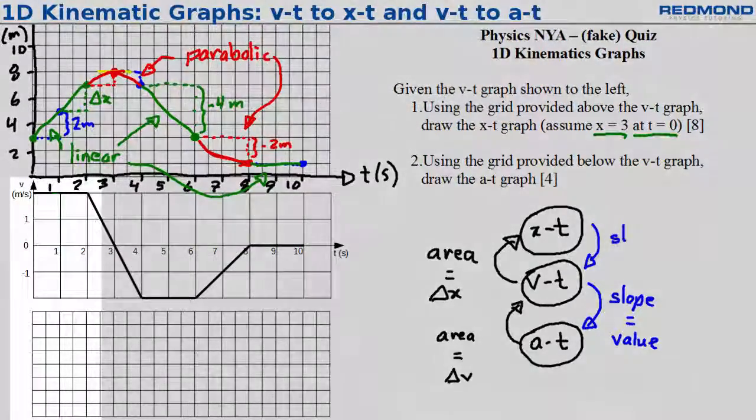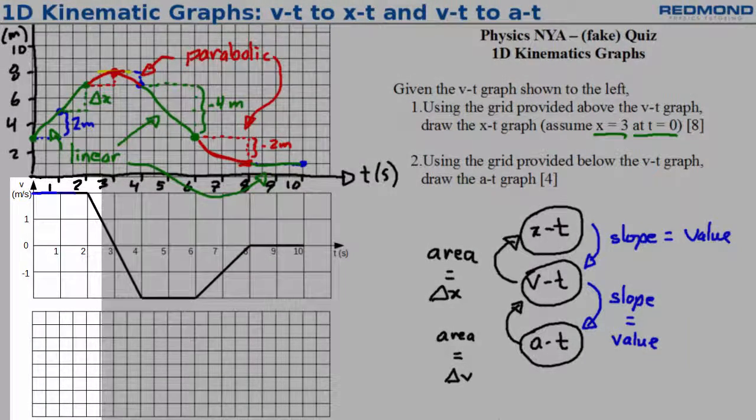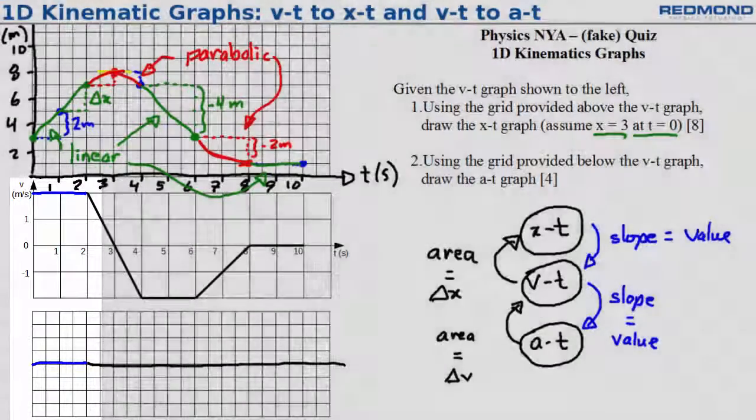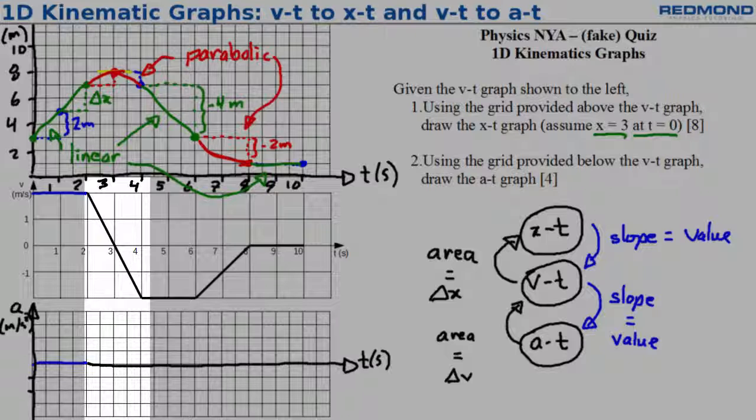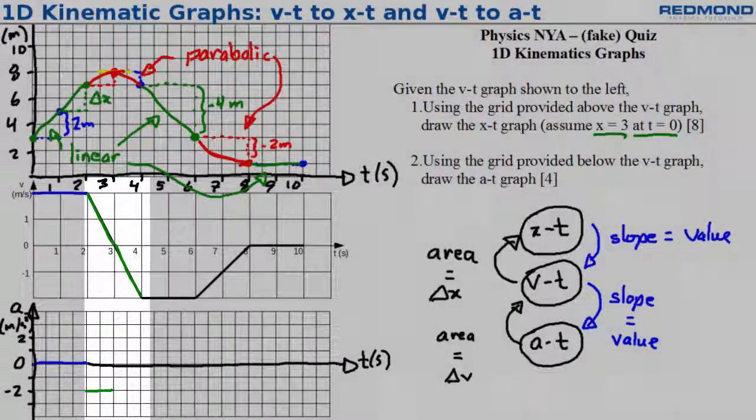From 0 to 2 seconds, the slope of the VT graph is 0, so I plot the value of the AT graph as 0 for the same time frame. From 2 to 4 seconds, the slope of the VT graph is negative 2 meters per second per second. The velocity drops 2 meters per second for each second of time that passes, so I plot the AT graph as negative 2 meters per second squared from 2 to 4 seconds.